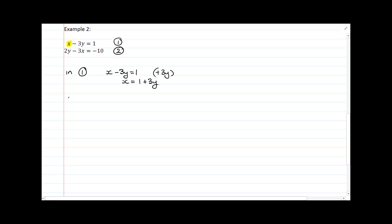So now I'm going to sub x equals 1 plus 3y into equation number 2. And that will give me 2y minus 3x equals negative 10. 2y minus 3 times, I'm going to stick with my colours, 1 plus 3y equals negative 10.